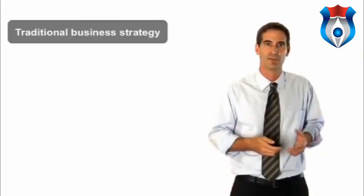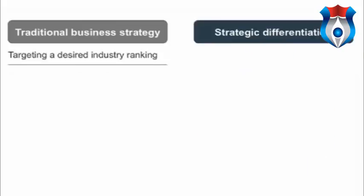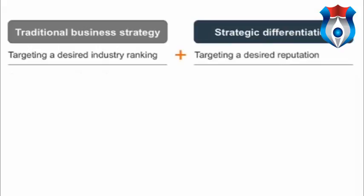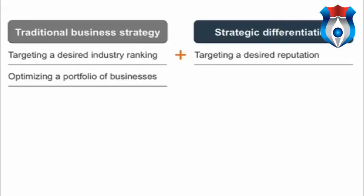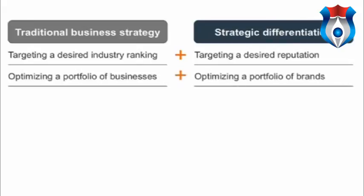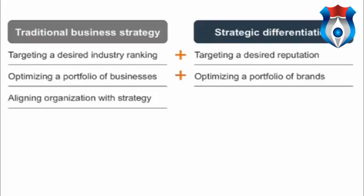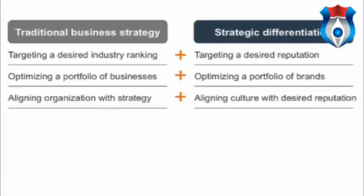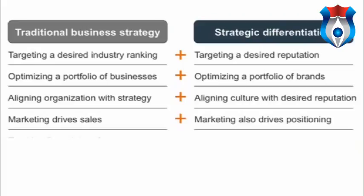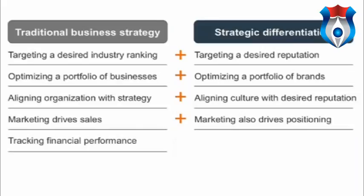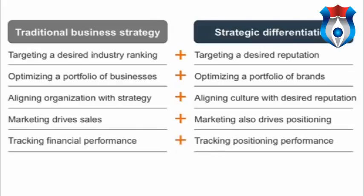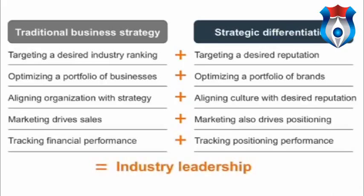What makes that happen? These companies don't only develop traditional strategy — they also target a desired reputation alongside their desired industry ranking. They optimize a portfolio of brands alongside their portfolio of businesses. They align their culture with the reputation they want to build — that takes different skills, different tools. Their marketing drives sales, but also drives positioning — the way people think about them across their entire value chain. They're good at tracking financial performance, but also at understanding their positioning performance. Whether it's a track record of innovation or case studies of customer successes, they can prove it. That's what makes industry leaders what they are.